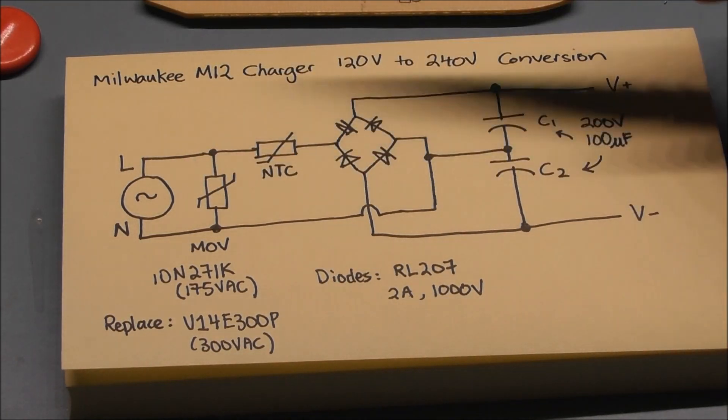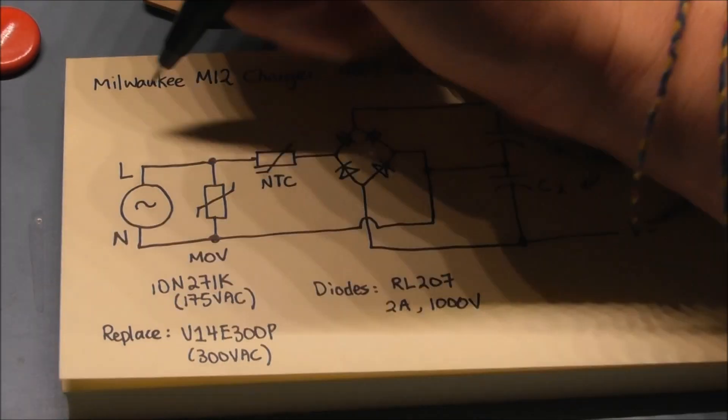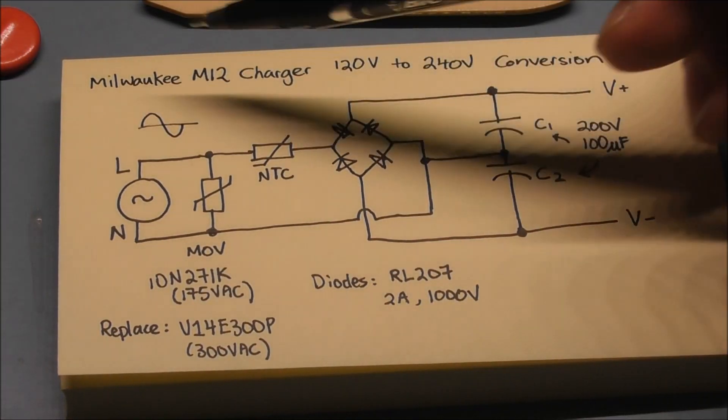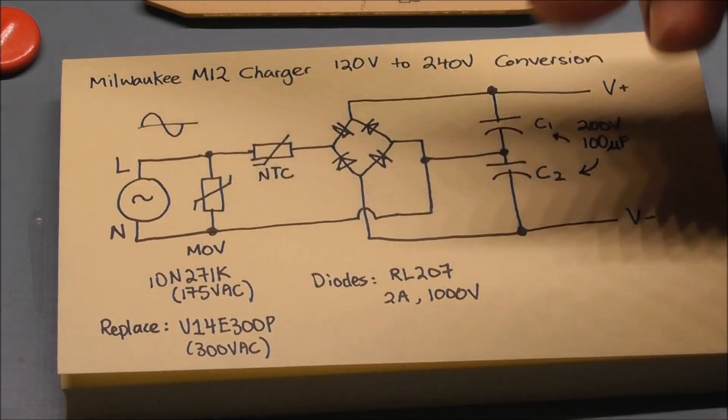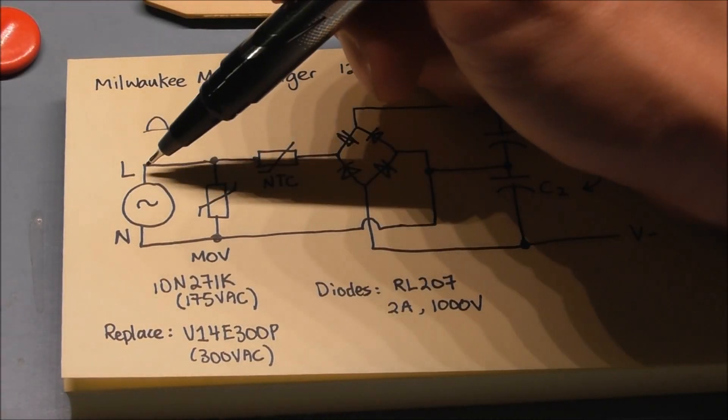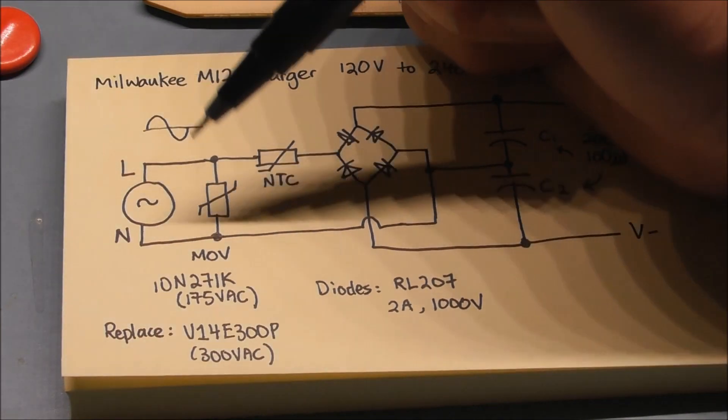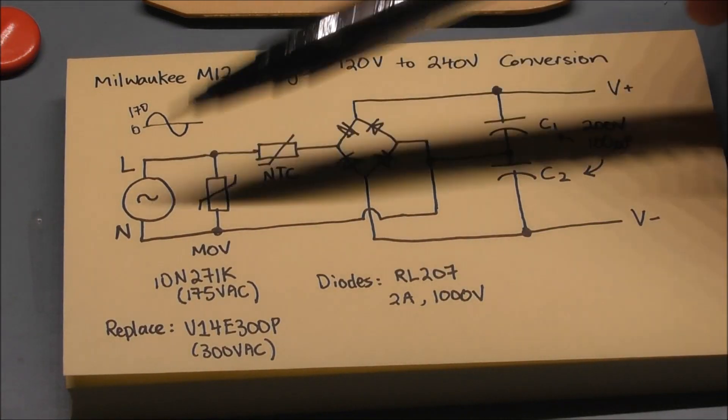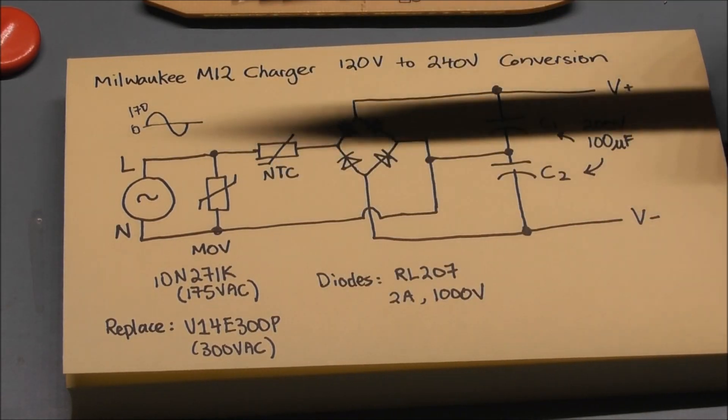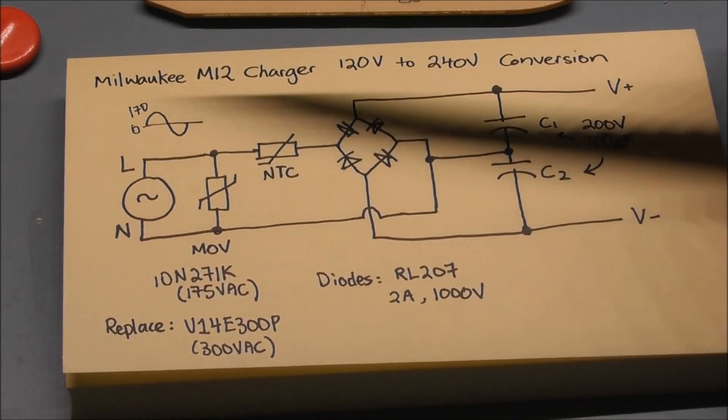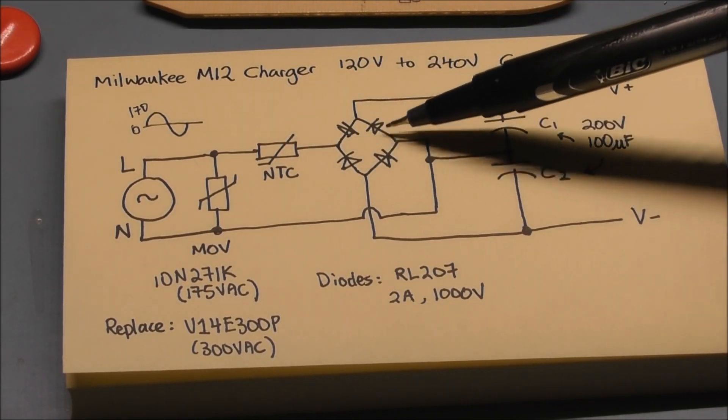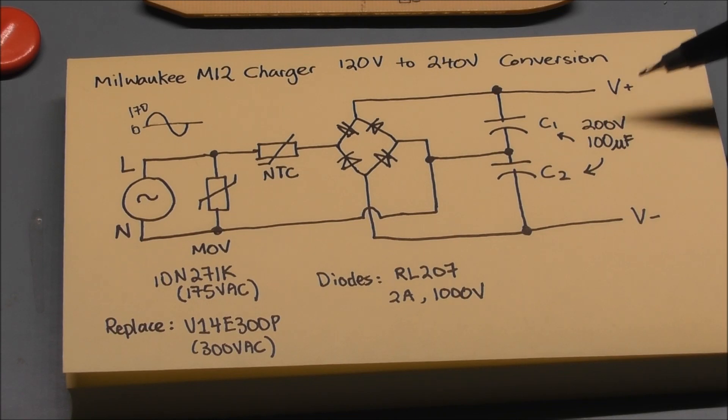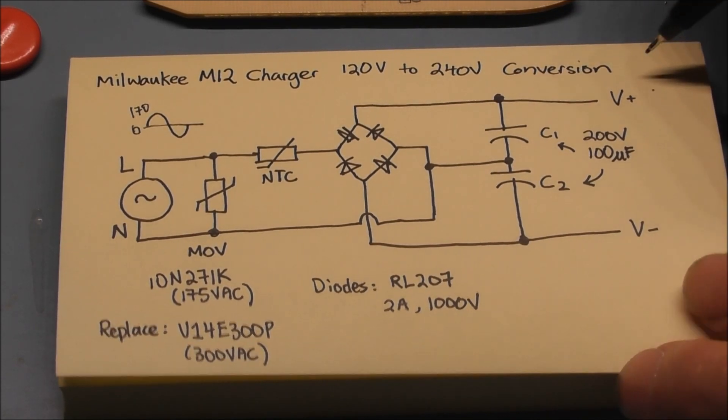So when power is first applied, let's consider the case of the input sine wave, the first half of the sine wave. At the beginning, on the first half, the voltage of the live line with respect to neutral goes from zero to 170 volts—this is for 120 volts AC, so it goes up to 170 volts peak. So if we follow the direction of the diodes, we see that the positive line, which we call V+, will be charged up to plus 170 volts.